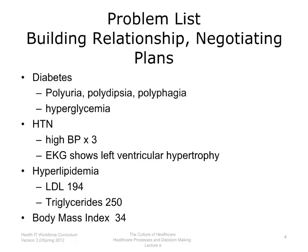To begin this discussion, consider a patient who has come to see a clinician to establish care. In the course of the visit, a problem list has been generated that includes diabetes, causing frequent urination, excessive thirst, an increased appetite, and high blood sugar. The list also includes high blood pressure, based on three previously recorded blood pressures that were abnormal, and evidence on an electrocardiogram that the heart is being affected.